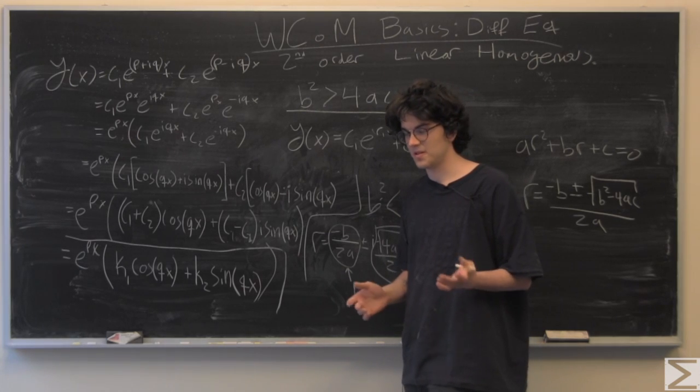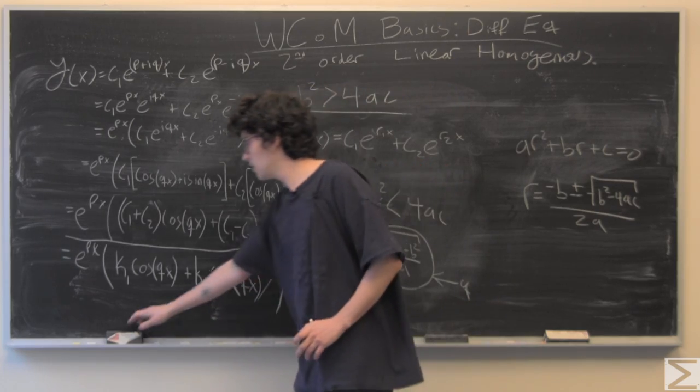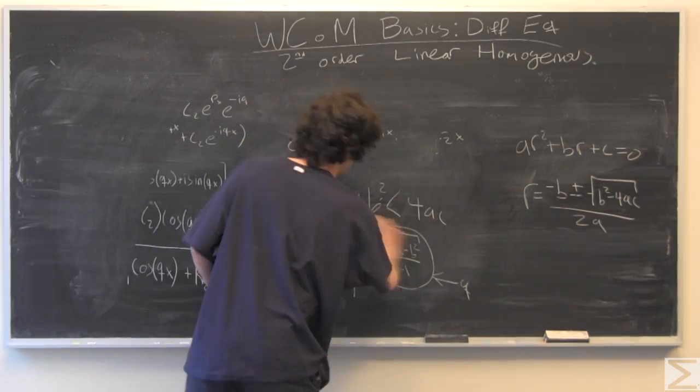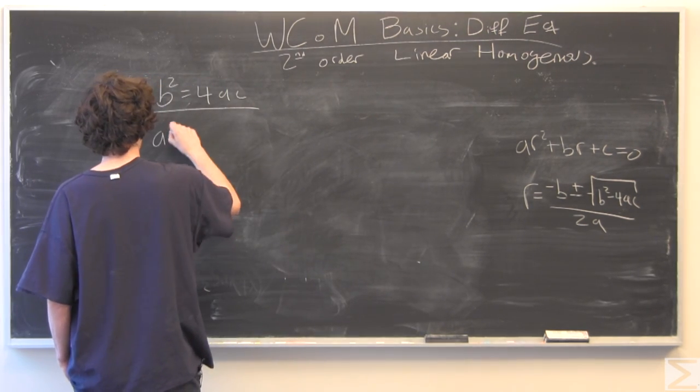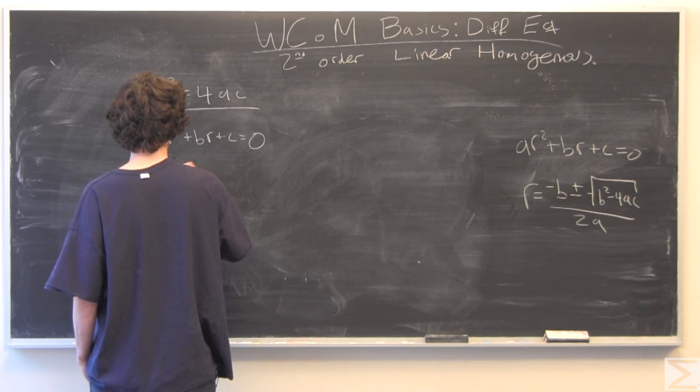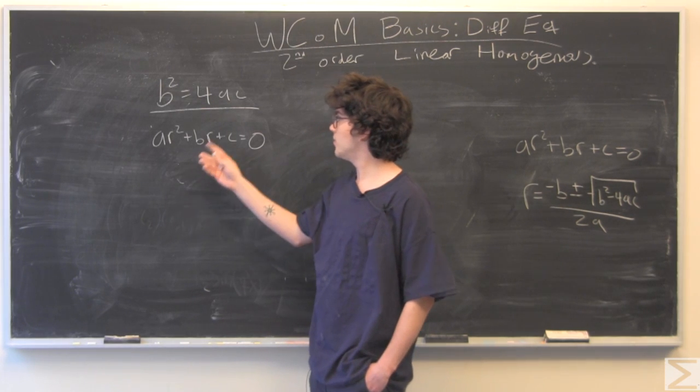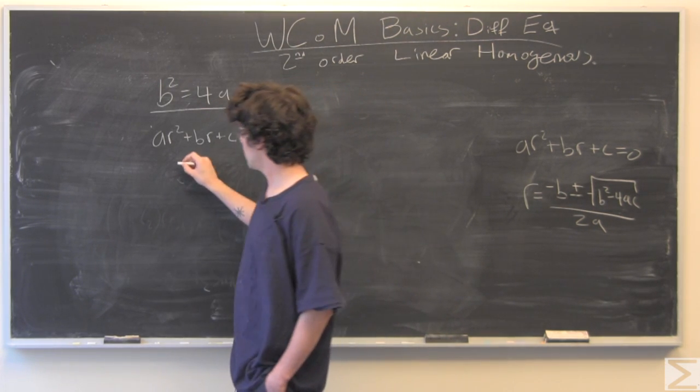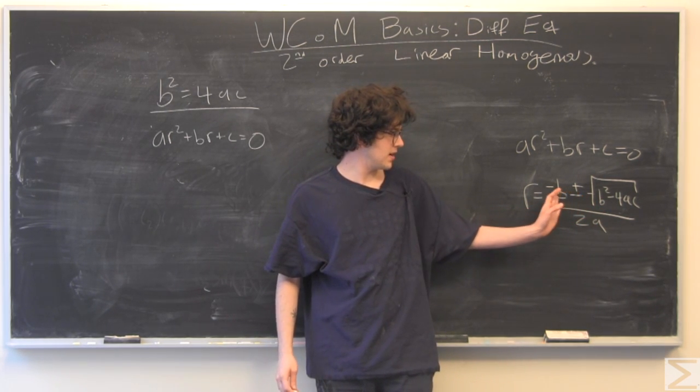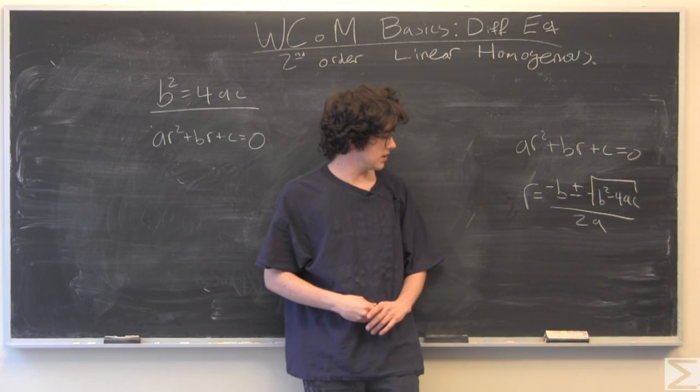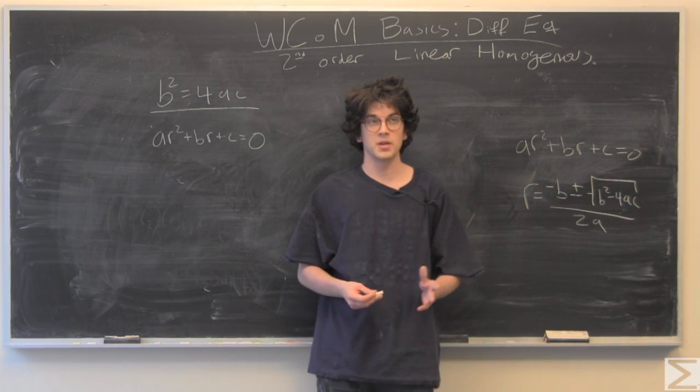With that in mind, we have one more scenario, and that's when b squared equals 4ac. If we have b squared equal to 4ac, we have negative b plus or minus 0 over 2a. So our r is just going to be negative b over 2a, and it's going to be repeated twice.